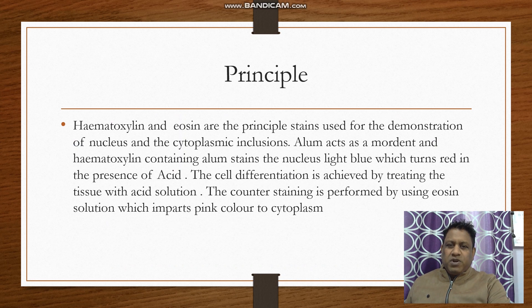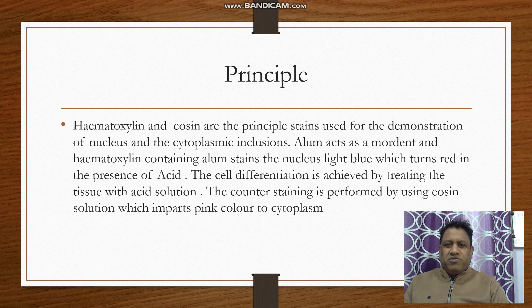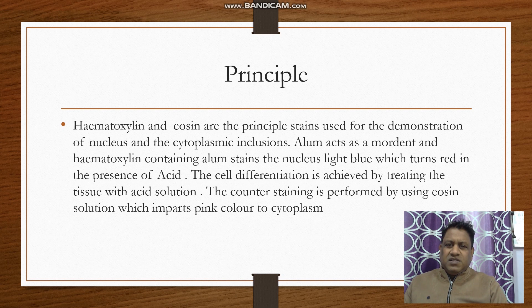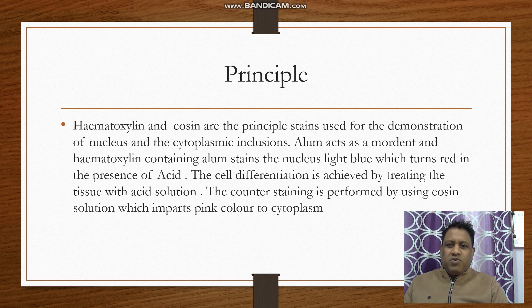What is the principle of this staining procedure? The cells contain various different types of structures, and every structure varies in their pH. Some of them are acidic, some of them are basic. Similarly, the stains we are using — H&E — are also acidic and basic. As we know, the concept 'opposites attract' — this is the principle of staining.